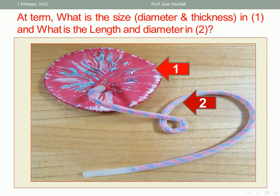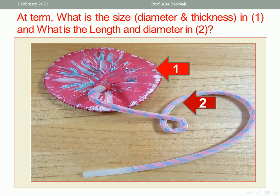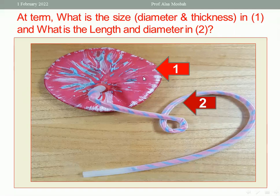At term, what is the size of picture number one, and what is the length and diameter of picture number two? Number one is the placenta. The diameter is 20 centimeters, and the placenta is round in shape. Thickness is about two to four centimeters, with maximum thickness at the center of the placenta, not at the periphery.